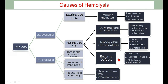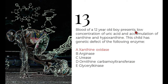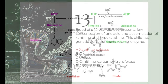Question 13: blood of a 12-year-old boy shows low uric acid and accumulation of xanthine and hypoxanthine — a genetic defect of which molecule? This is about purine degradation. Purines are adenine and guanine; pyrimidines are cytosine, thymidine, and uracil. Purine nucleotides (purine base + ribose sugar + phosphate) degrade to form uric acid as the end product.